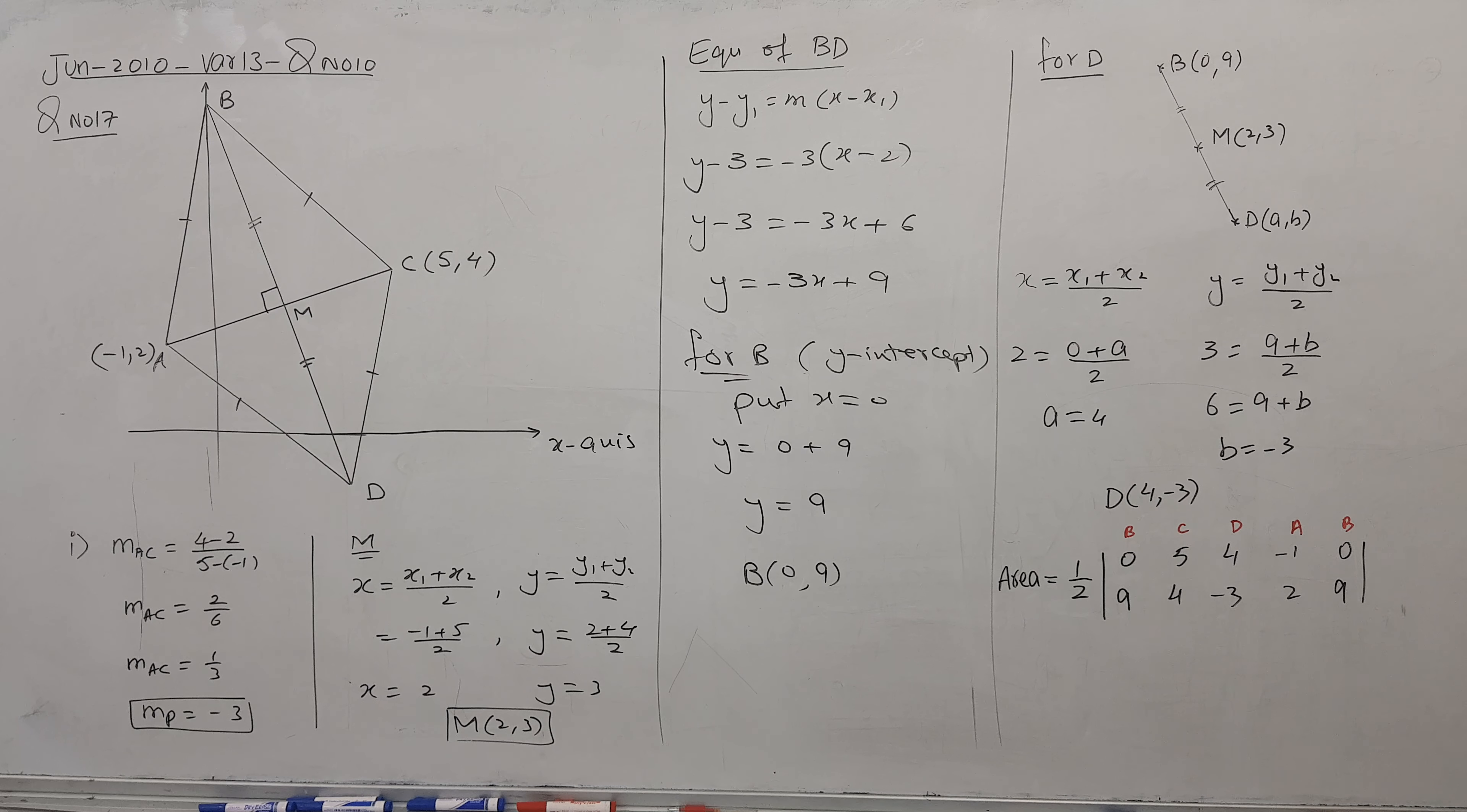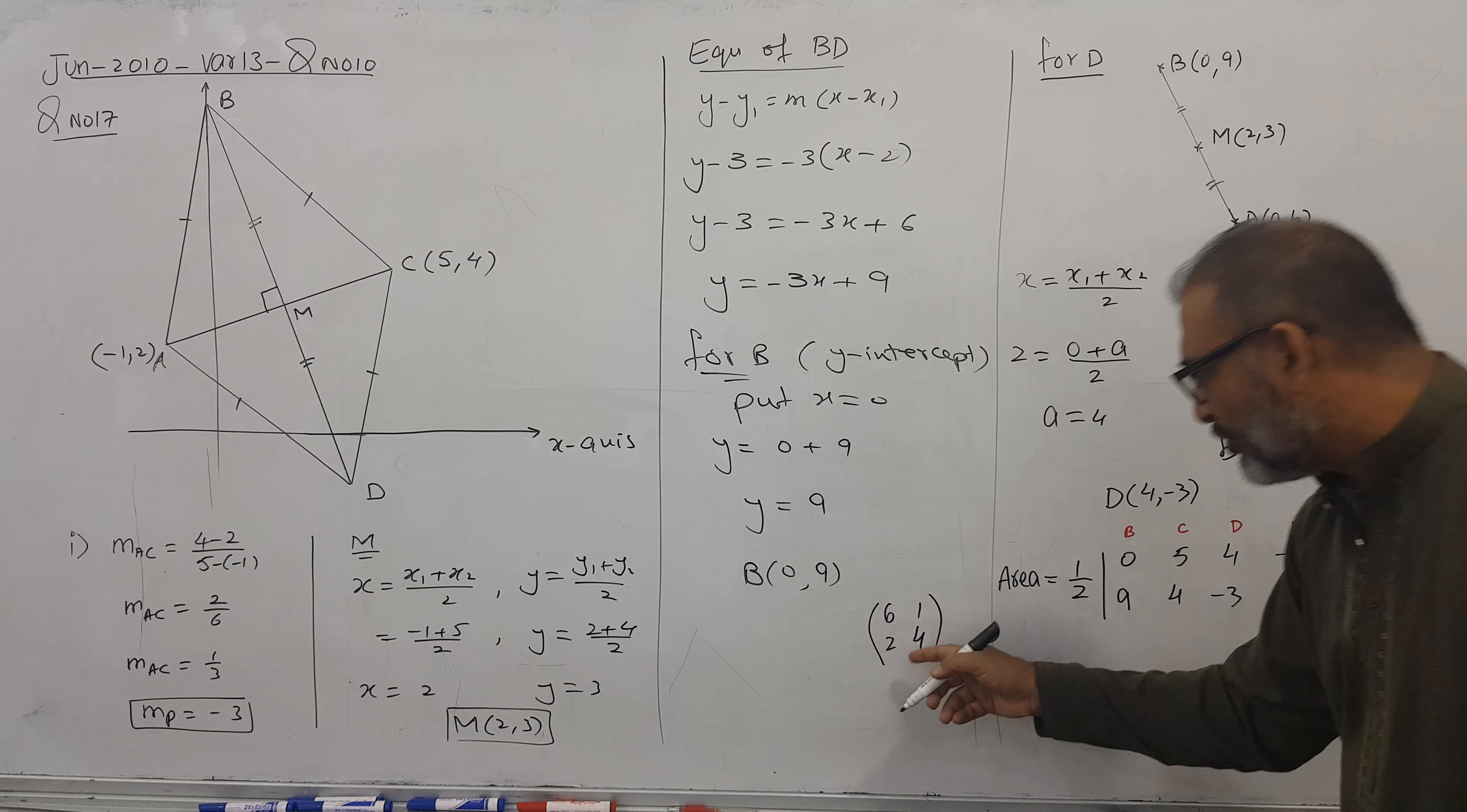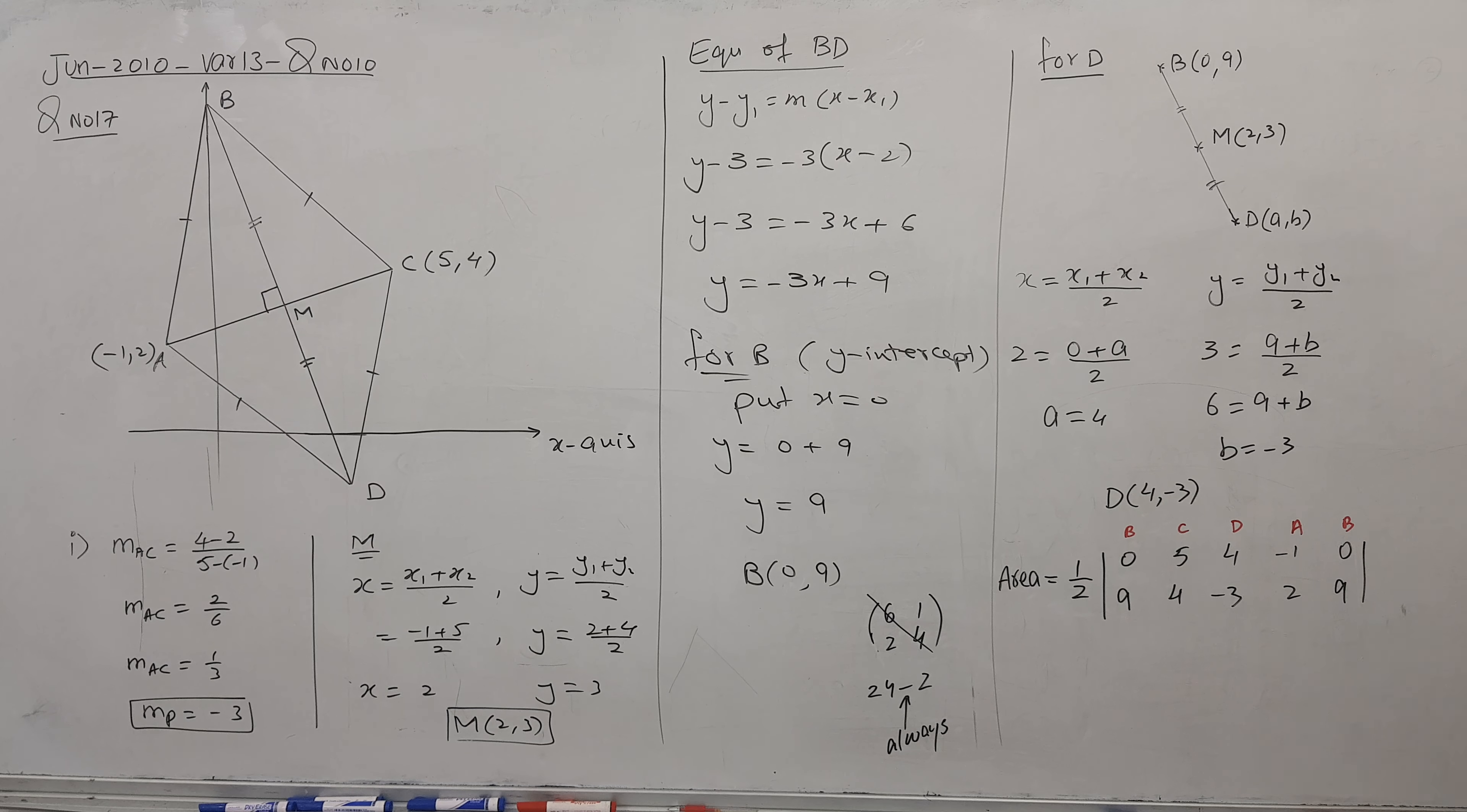Maybe you have done in lower grade, matrices - how to find determinant. This is a sample: A B, C D. Let me take numbers: 6, 1, 2, 4. How to find determinant? 6 times 4 is 24, minus 2 times 1 is 2. This is always minus sign. Apply the same criteria on this diagram. So 0 times 4 is 0, minus 9 times 5 is 45.